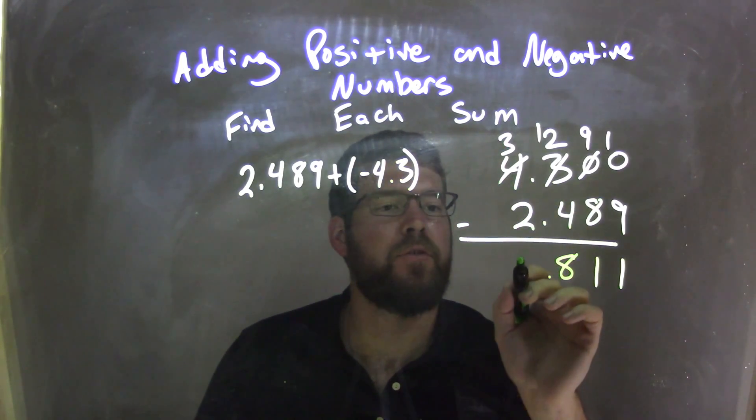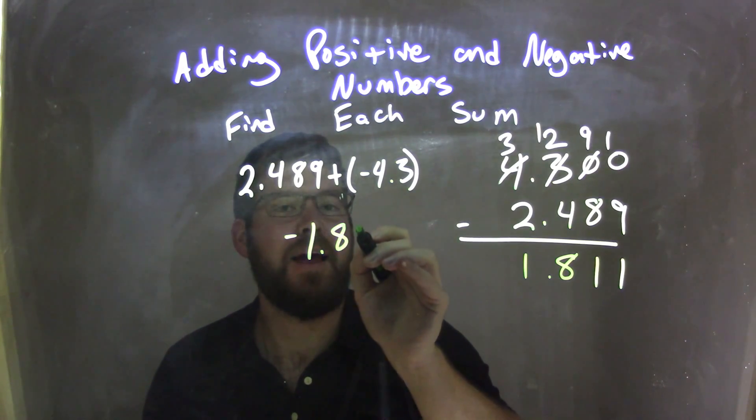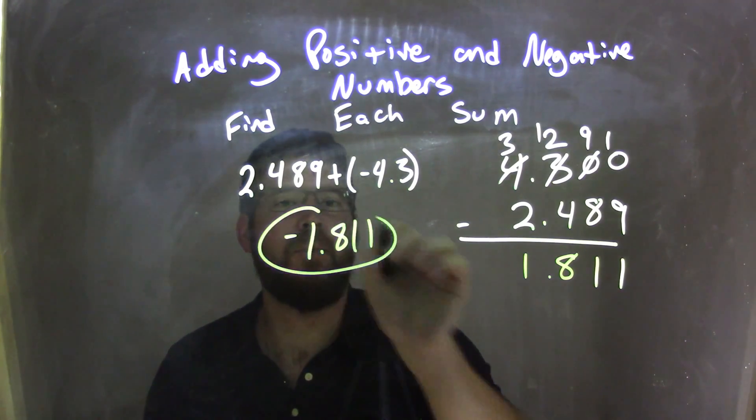And we have 3 minus 2, which is 1. And we need to make that negative as our final answer: negative 1.811. And there is my final answer.